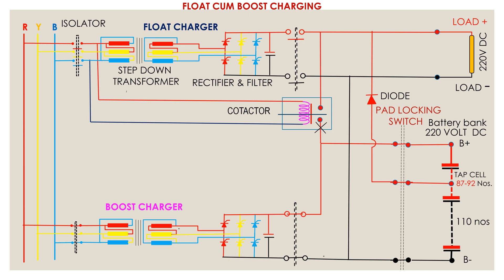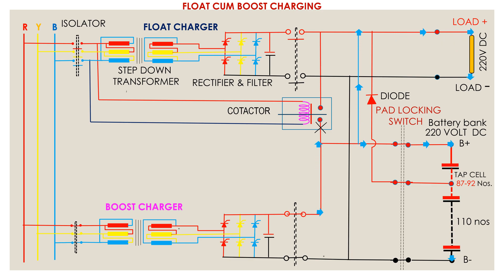Again, after being sufficiently charged, the battery bank takes a little current, which causes a relay to switch over the charging process back to the float charger. Where such automatic changeover process is absent, the operations are performed manually. During charging by the boost charger, the charging voltage becomes high enough to damage the relay, trip coil, or close coil, etc.